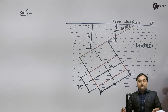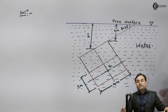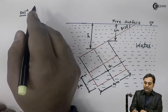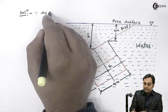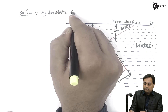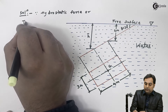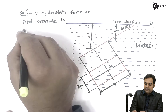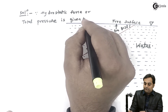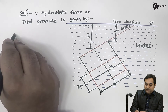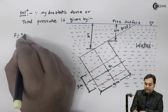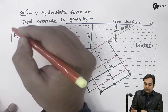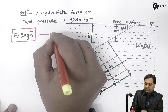We have to find the hydrostatic force and center of pressure. The hydrostatic force or total pressure is given by the formula: F = rho × A × g × h_bar. I will call this equation number one.